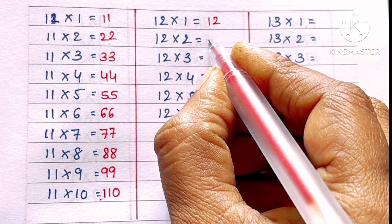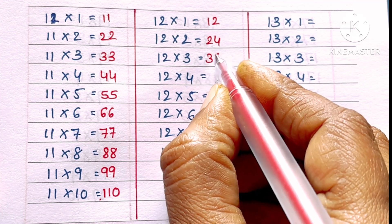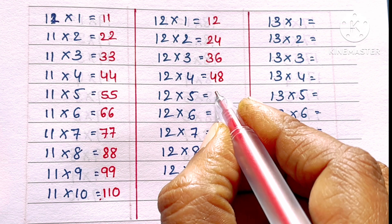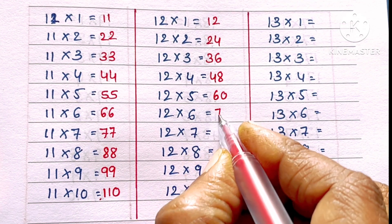12 ones are 12, 12 twos are 24, 12 threes are 36, 12 fours are 48, 12 fives are 60.